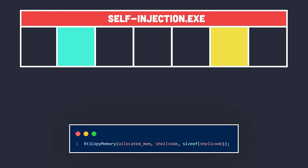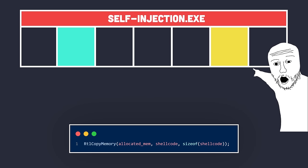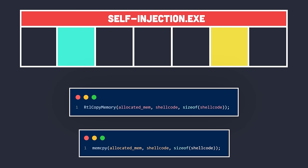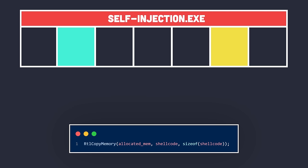The second step is to write our shellcode to the allocated memory using the RtlCopyMemory API, which has the same functionality as memcpy but is the Windows-based memory API. It takes three parameters: the destination (where to write), the source (where to read from), and the size of the copied data, which is set to the size of our shellcode.